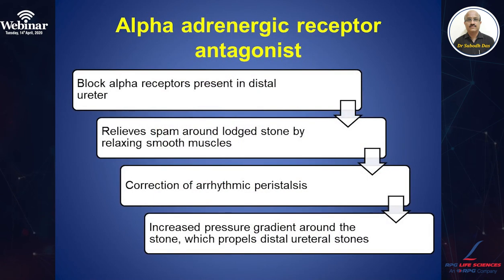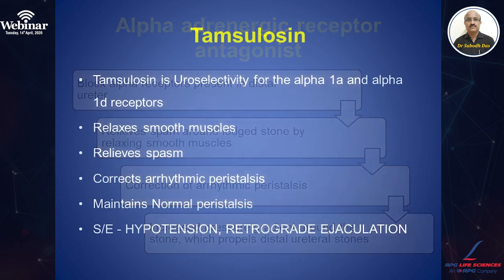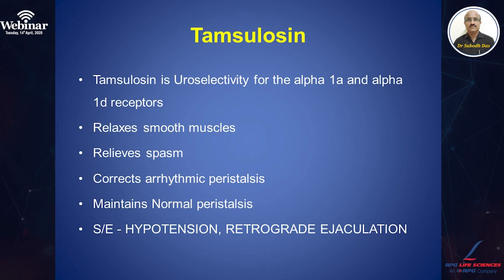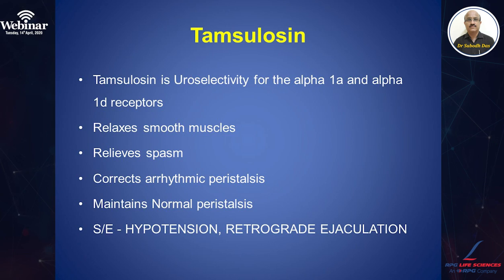These receptors are present in the distal ureter. Blocking them relieves the spasm around the large stone by relaxing the smooth muscles, corrects arrhythmic peristalsis, and increases the pressure gradient around the stone, which finally propels ureteric stones. The key alpha blocker used is tamsulosin — a uroselective alpha-1A and alpha-1D receptor blocker. This relaxes smooth muscle, relieves spasm, corrects arrhythmic peristalsis, maintains normal peristalsis, and the resulting dilatation leads to release of the stone. Side effects are postural hypotension and retrograde ejaculation. This agent is commonly used in benign prostatic hyperplasia treatment as well.